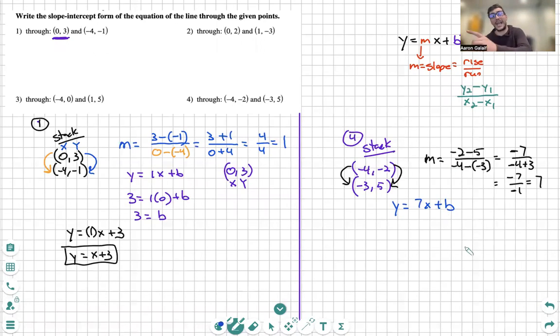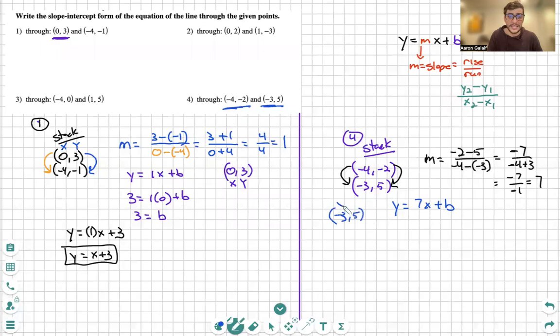I plugged in my m back into my original equation with x and y. I will now choose a point, one of these points that were given. I will just choose negative three, five, just because why not. And we are going to plug this in for x and y. And then after that, we will have solve for b. We plug in five for y, negative three for x, and solve.